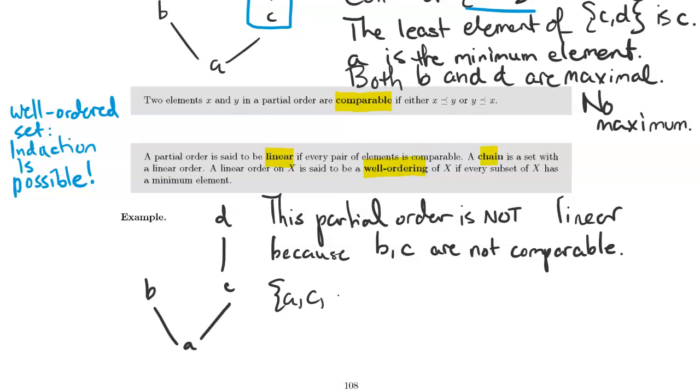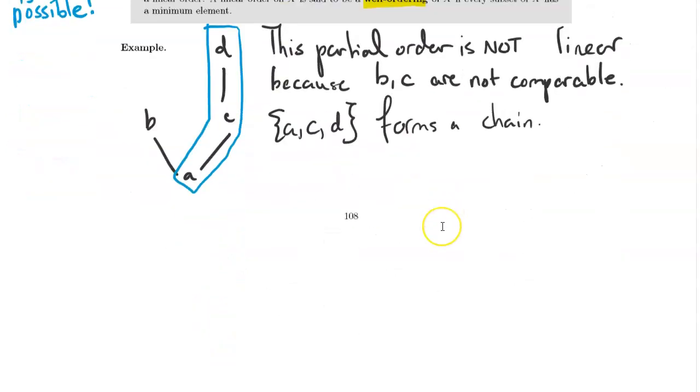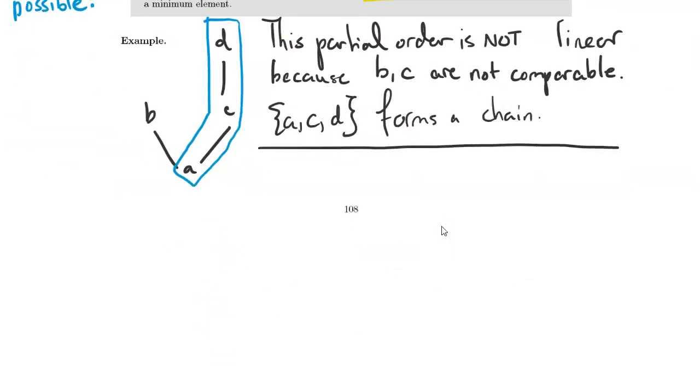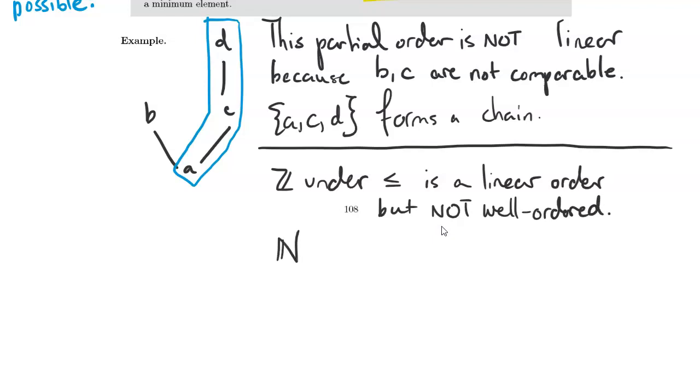The set A, C, D forms a chain because it is a set on which the order is linear. Here's our chain, A, C, D. Unrelated examples: The set of integers under the usual less than or equal to relationship is a linear order, but it is not well-ordered because there is no starting point—there's no smallest element. However, the natural numbers under the same relation are a well-ordered set.